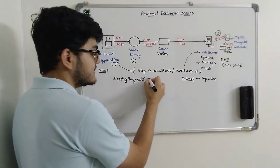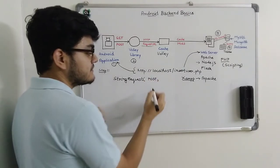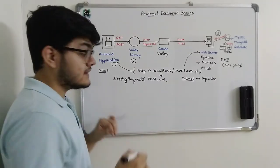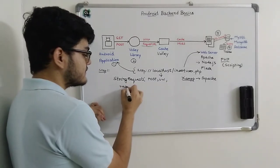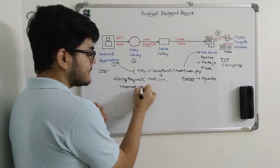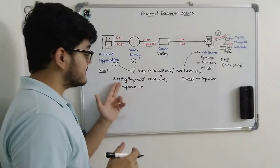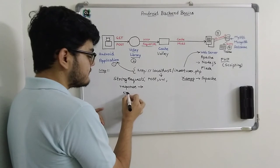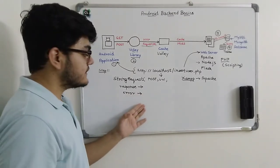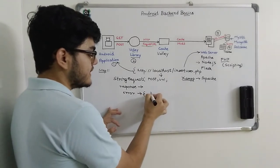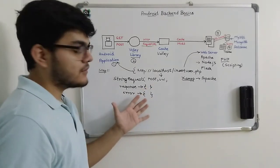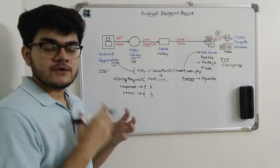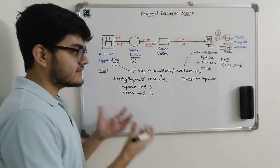The first parameter is going to be the POST method — we specify that we are using the POST method. The second parameter is the URL. The third parameter is the response lambda, which gives the response after the StringRequest is executed by the Volley library. The fourth and last parameter is error, so if there is any error in executing the request, we can handle it there. These things will become clearer when we implement them in Android Studio in the next tutorial; this is just an overview.